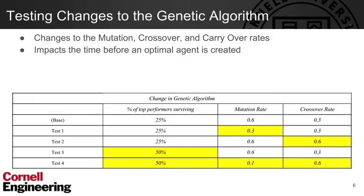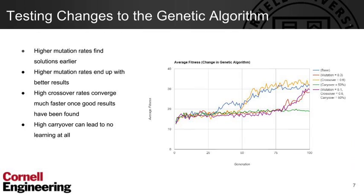Now we'll take a look at the first of the various tests we've done. The first type were tests related to genetic algorithm changes — we changed the mutation, crossover, and carryover rates, and observed how that affects the average fitness of the population. We noticed that higher mutation rates ended up finding solutions earlier and led to better results, whereas high crossover rates converged much faster once optimal agents were found. High carryover led to basically zero learning, because very few new agents were being created — mutation is the most important function for finding the solution.